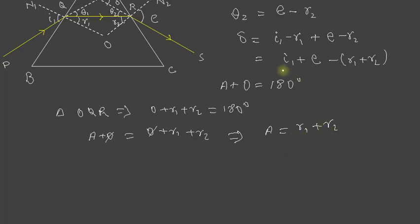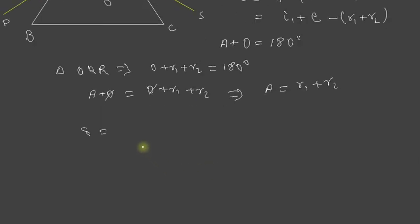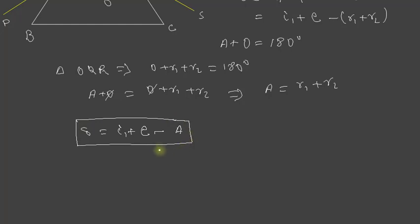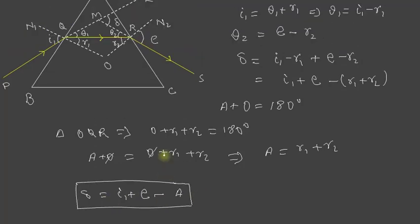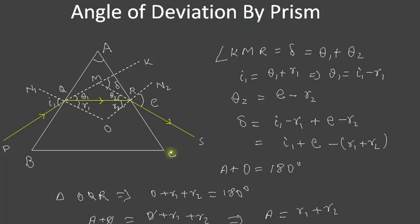Substituting r1 + r2 = A into the expression for delta, we get delta = i1 + e − A. This is the angle of deviation for a prism: the angle of incidence on the first surface plus the angle of emergence on the second surface minus the angle of the prism. See you in the next video — take care, bye.